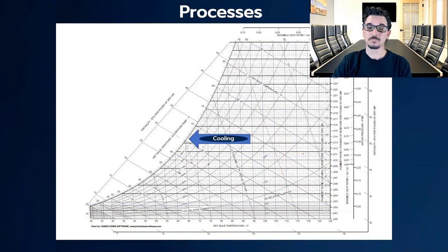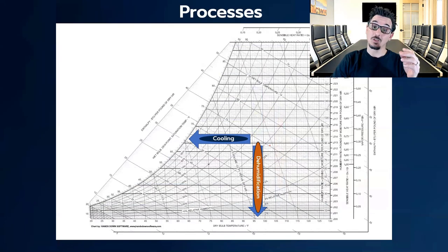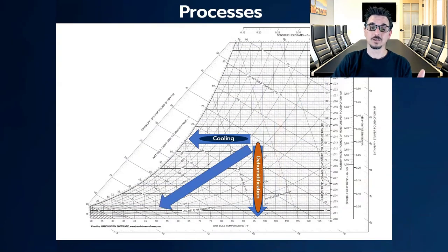Just as a review, cooling is moving in this direction. Dehumidification, we're moving in this direction. So when we go through a cooling coil in an air conditioning system, we're both cooling and dehumidifying and it would look something like this. Anything moving in this direction on the psychometric chart is a cooling and dehumidification process.